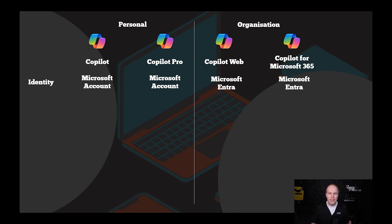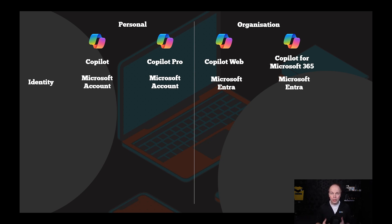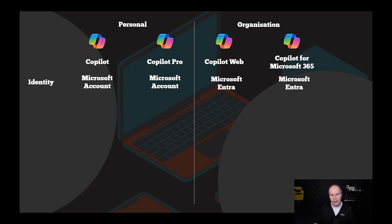What we also have is Copilot for Microsoft 365. This is where you can start chatting to your corporate data — your data inside the Microsoft Graph that you individually have permission to see. You also get the automation inside Microsoft products like Word, Excel, and PowerPoint, similar to what I was just sharing about from a Copilot Pro point of view.